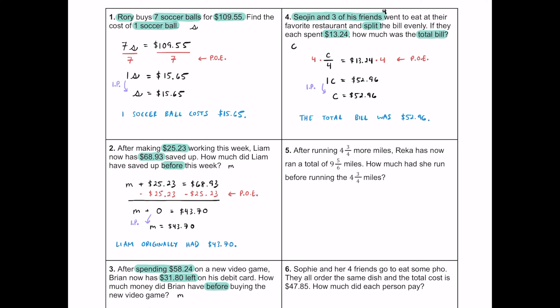Number five: after running four and three-fourths more miles, Rekha has now run a total of nine and five-sixths miles. The question is how much had she run before running the four and three-fourths miles? I'll use D for distance. We don't know what she ran first, but then she ran four and three-fourths miles, giving a total of nine and five-sixths. So D + 4¾ = 9⅚.